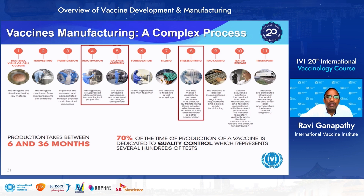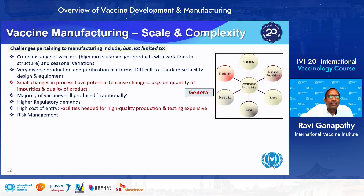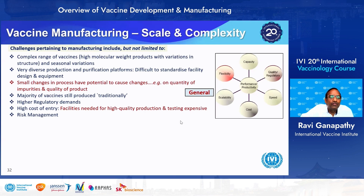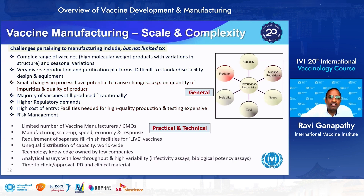There are various challenges because vaccines are very complex with varied production and purification platforms, making it difficult to standardize facilities. Small changes in process can lead to potential changes in quality attributes. The majority of vaccines are produced traditionally, requiring very high-quality production and expensive testing with very high regulatory demands. Risk management must be built in from the beginning of the design stage. Additional practical and technical challenges include scale-up requirements, the need for separate fill-finish for live vaccines, unequal distribution, technology know-how owned by only a few companies, low-throughput analytical assays, and long timelines to clinic and approval.